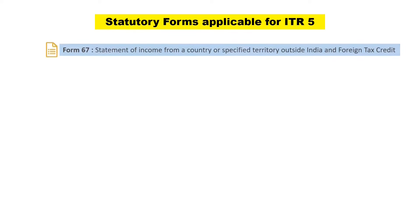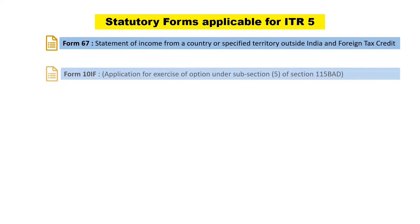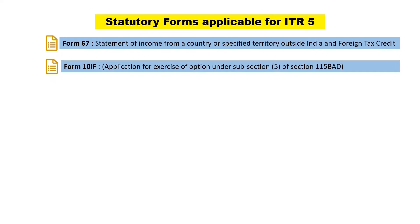Let us see the statutory forms applicable for ITR-5. Some of the forms which can be applicable are Form 67, which is a statement of income from a country or specified territory outside India and foreign tax credit, and Form 10IF, which is an application for exercise of option under subsection 5 of section 115BAD.